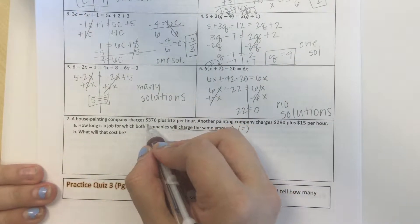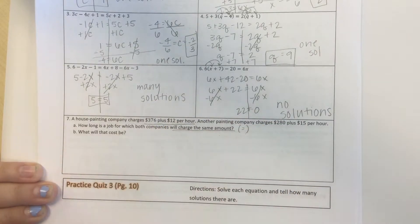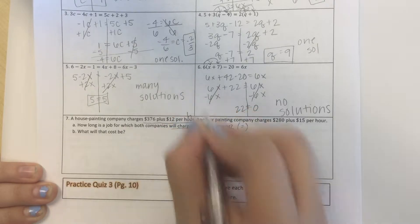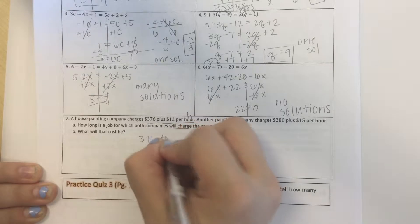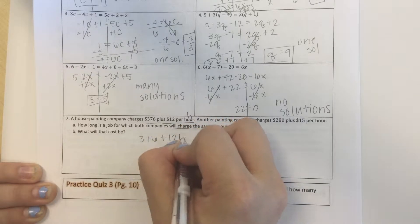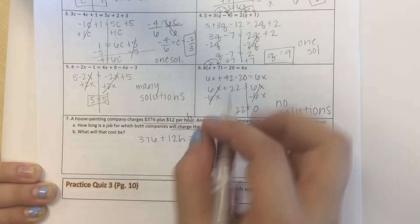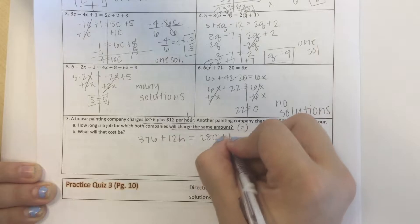So they already tell us, $376 plus $12 per hour. So we have a variable here, we're going to put h per hour. So $376 plus $12 per hour wants to be the same as $280 plus $15 per hour.